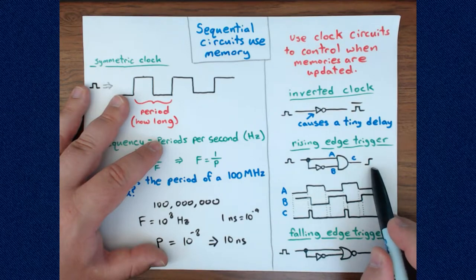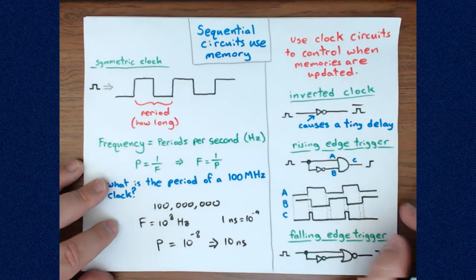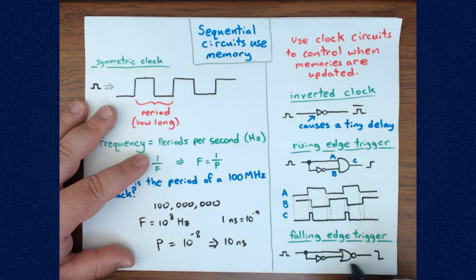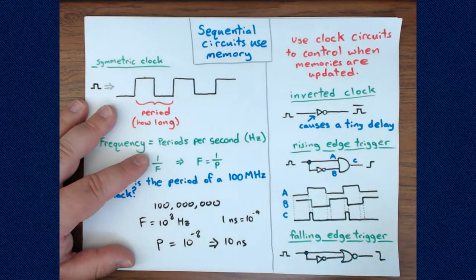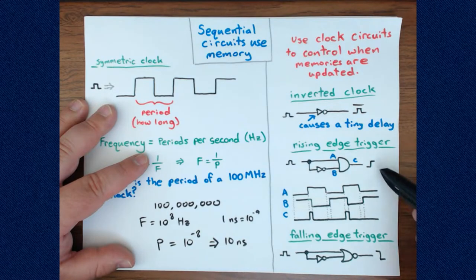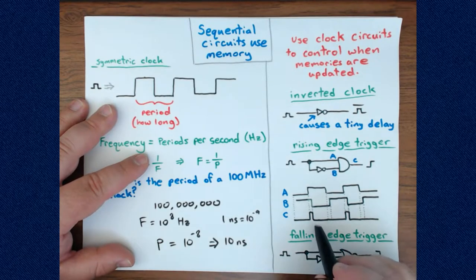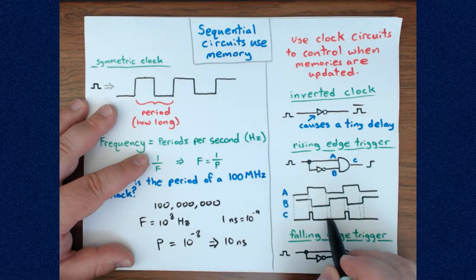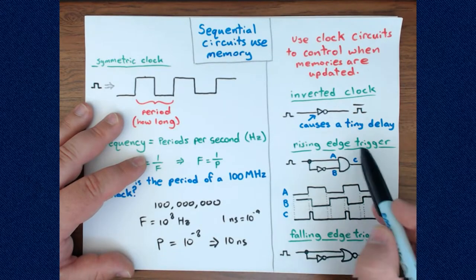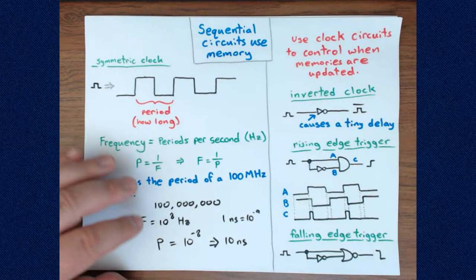In some circumstances we may also want a falling edge trigger, and we can do that with nearly the same circuit — just replace the AND gate with a NOR gate. If we wanted a triggering clock twice as fast as the original, we can OR the rising edge trigger clock and the falling edge trigger clock together, getting pulses on both the rising and falling edges, doubling the speed.